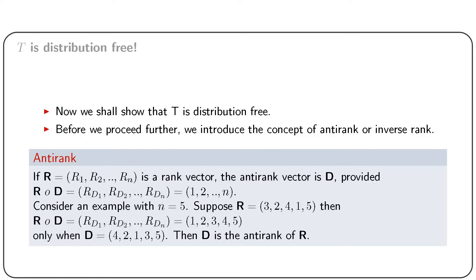We get the vector of ranks as r1, r2, ..., rn, which is denoted by r-vector. The vector d is the anti-rank if the composite vector r_{d1}, r_{d2}, ..., r_{dn} is the vector 1, 2, ..., n. For example, suppose the rank vector is given by 3, 2, 4, 1, and 5.